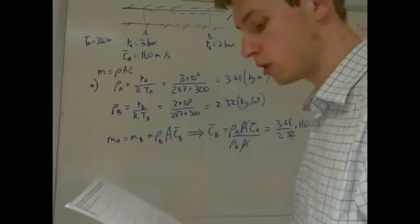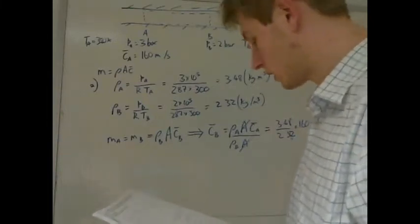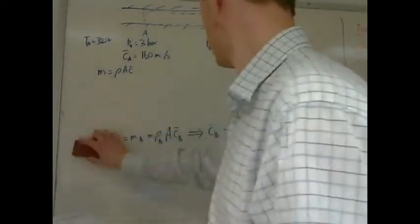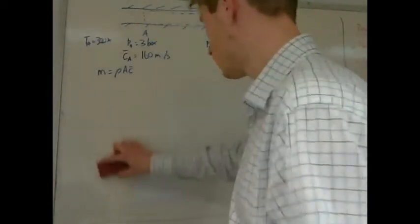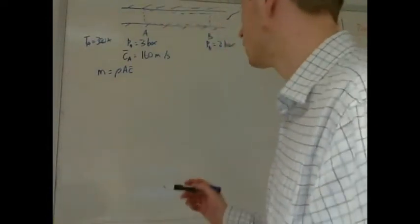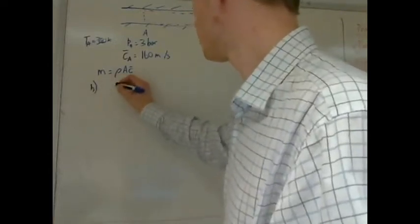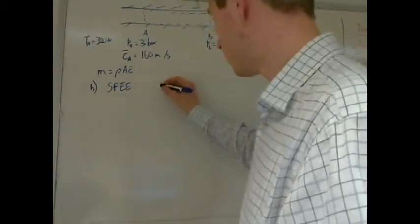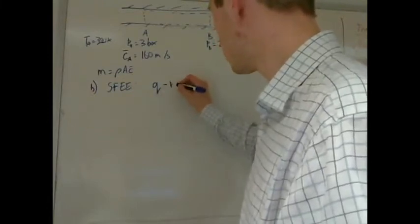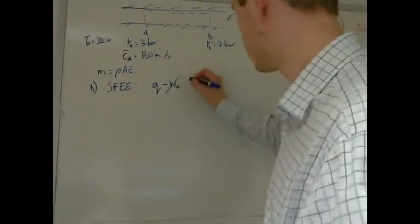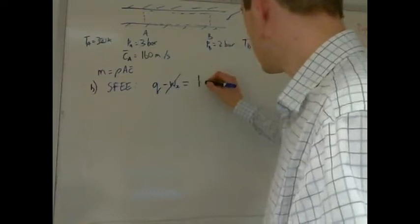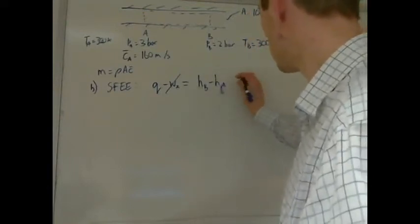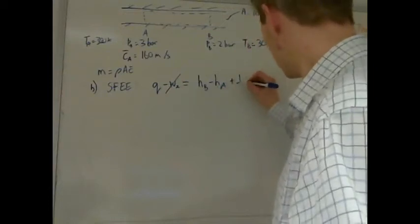For part B, calculate the heat transfer per kilogram of air between the two points. To calculate this we apply the steady flow energy equation. Writing it per kilogram, Q minus shaft work into the control volume — which is zero — equals HB minus HA, the change in specific enthalpy, plus one half times the change in velocity squared.